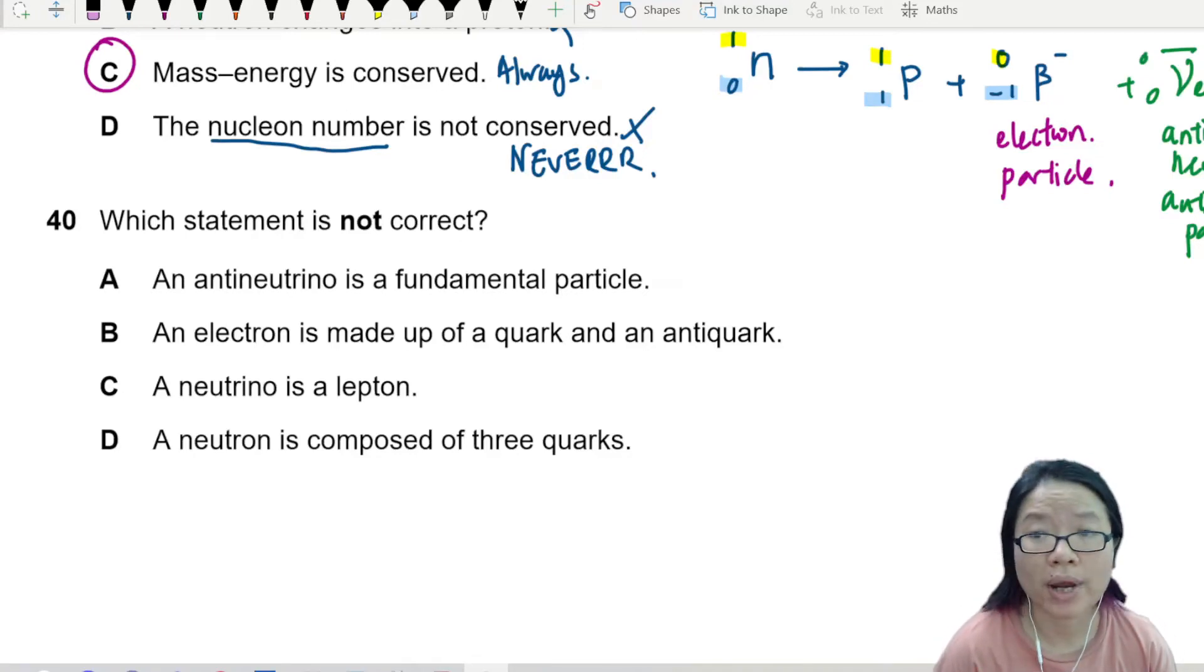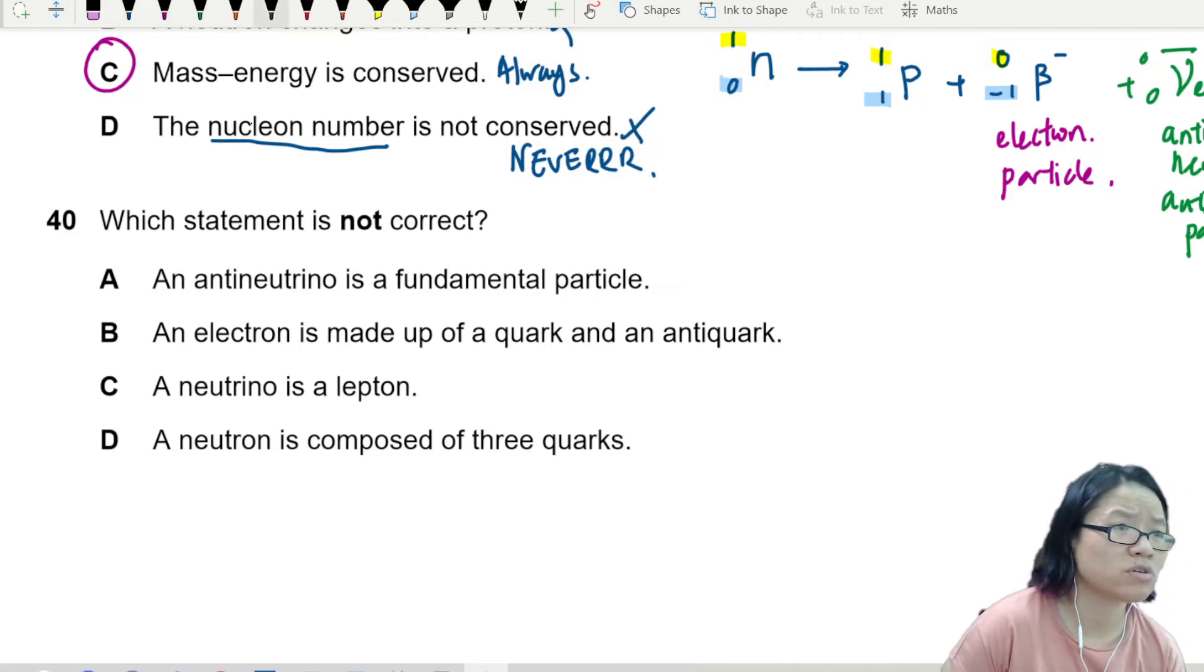Which statement is not correct? An anti-neutrino is a fundamental particle. B, an electron is made out of a quark and an anti-quark. No, no, no, it was wrong.